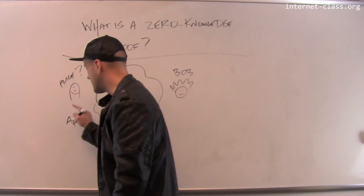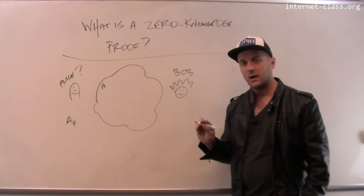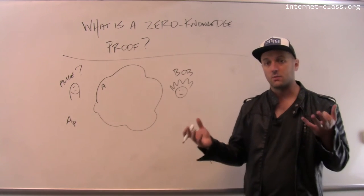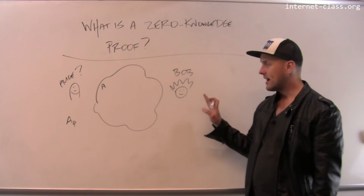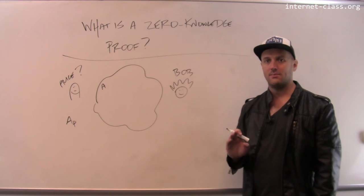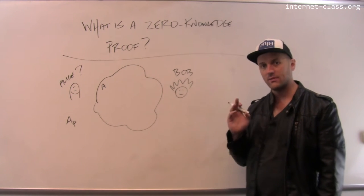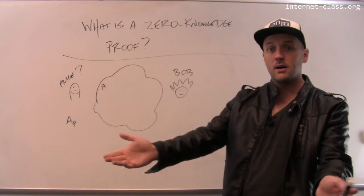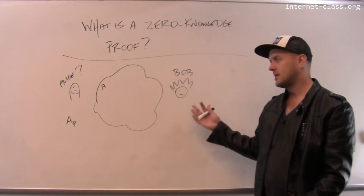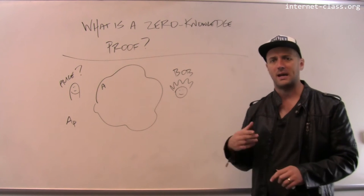So Alice's private key is something that the real Alice will know, but any imposter Alices will not know. The question is, how can Alice prove to Bob that she knows this without revealing the key itself? She could send the key to Bob, but then Bob would have the key and Bob could pretend to be her and decrypt her messages and do all sorts of bad things.